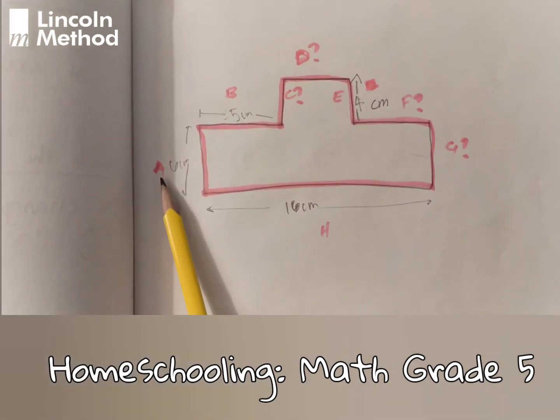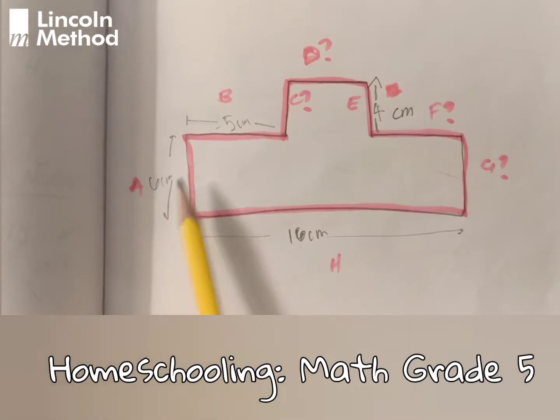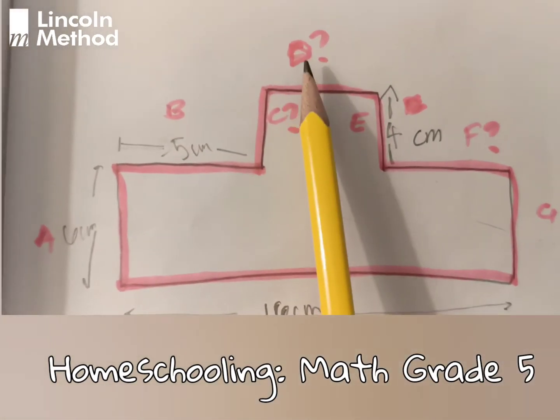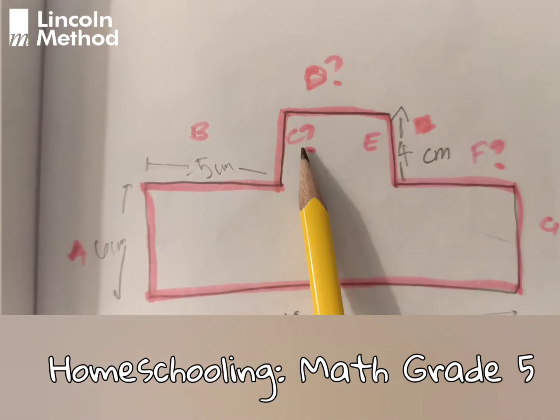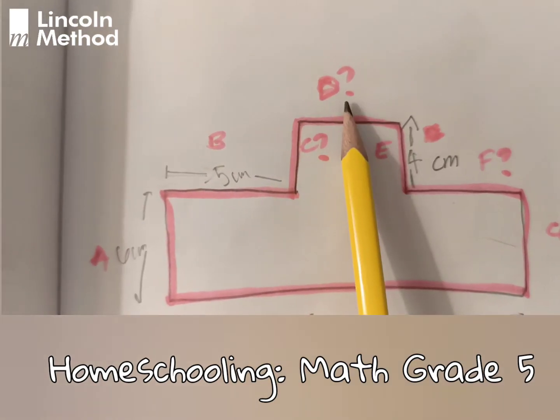For example, A is 6 cm, B is 5 cm, and D we don't know.